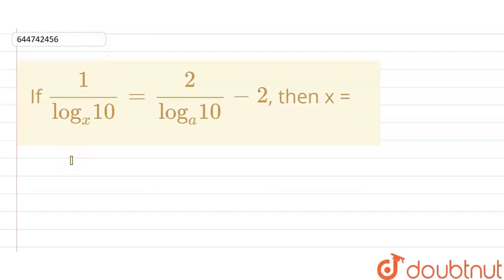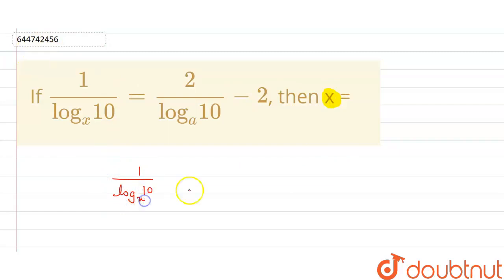The question is: 1 upon log base 10 of x equals 2 upon log base 10 of a, minus 2. We have to find the value of x. We have 1 upon log x base 10. We will take 2 as a common factor.